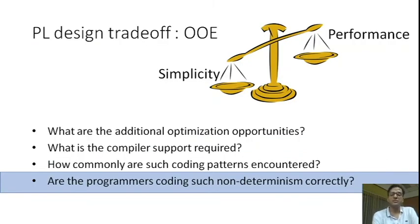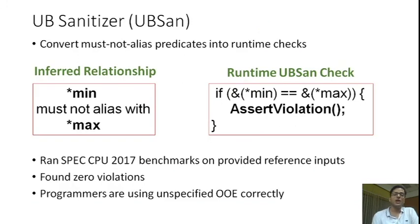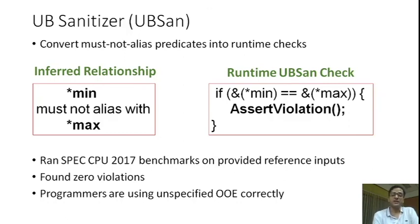Are programmers coding such non-determinism correctly, or is it a source of programming errors? To evaluate this, we implemented a UB sanitizer as part of the Clang/LLVM framework in which Oolala is implemented. This UB sanitizer converts must-not-alias predicates inferred by the Oolala algorithm into runtime checks. For example, if Oolala infers that star min must not alias with star max, a runtime check is emitted. This instrumented binary was run on the provided reference inputs with SPEC CPU 2017 benchmarks, and we found no violations of such must-not-alias relationships. This seems to indicate that programmers are using unspecified order of evaluation correctly in C.